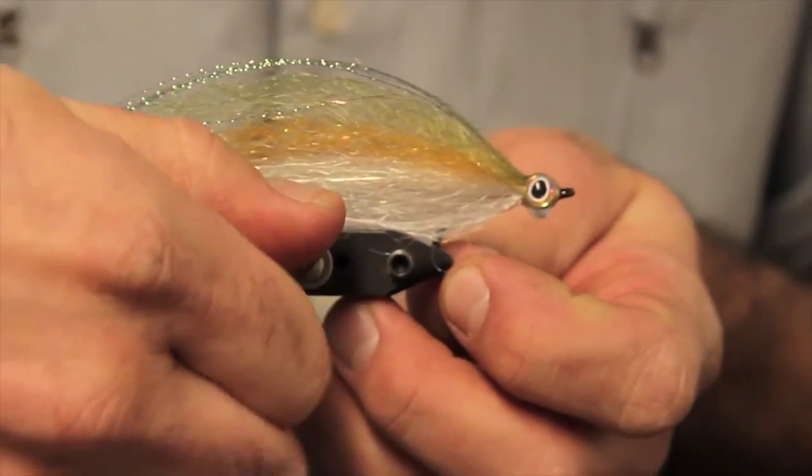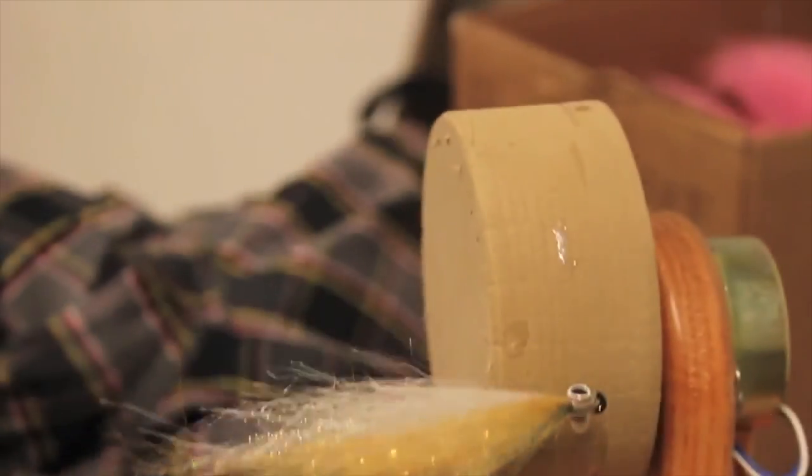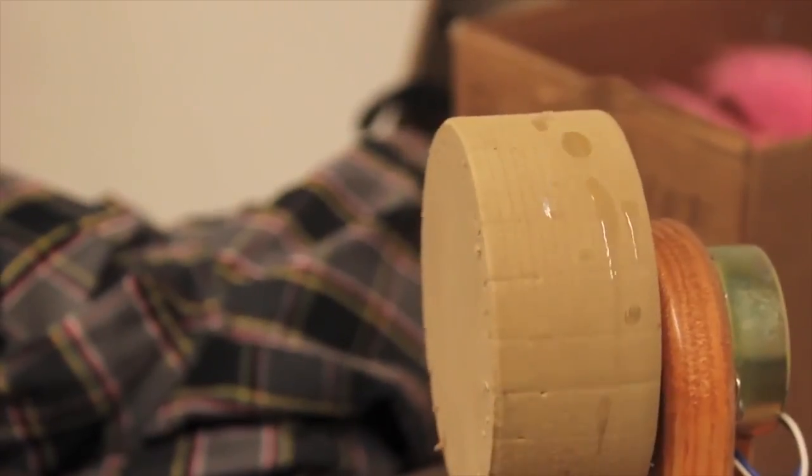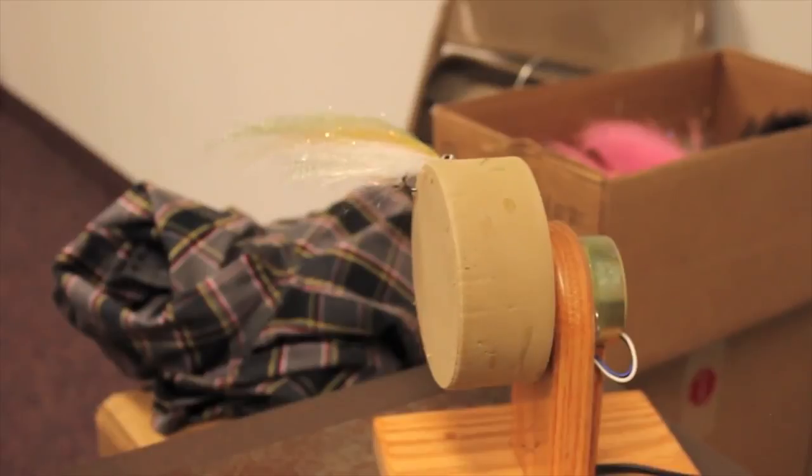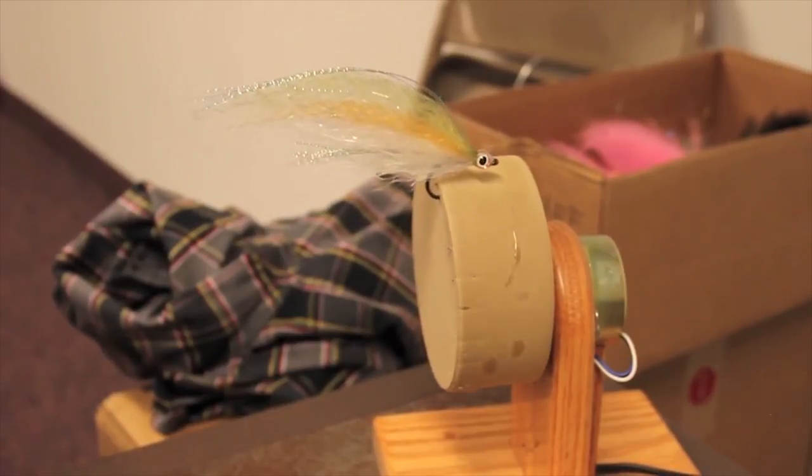And then we're going to go ahead and put it on the fly merry-go-round. Turn this thing on. And then what this is going to do is just going to give you a nice even head. Stuff that dries too fast will make the head lopsided. But that's it. The fly should be done in about three or four minutes. Put it in your box. Good to go.